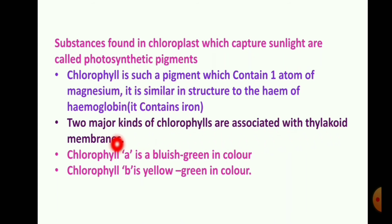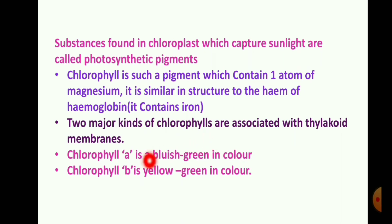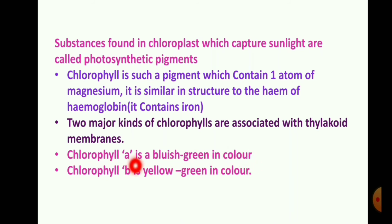Two major kinds of chlorophylls are associated with thylakoid membranes: Chlorophyll A, which is bluish green in color, and Chlorophyll B, which is yellow green in color.